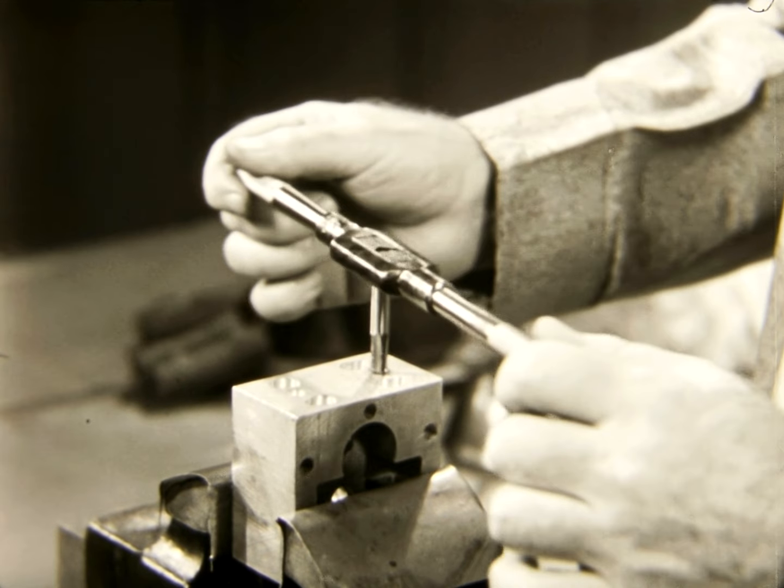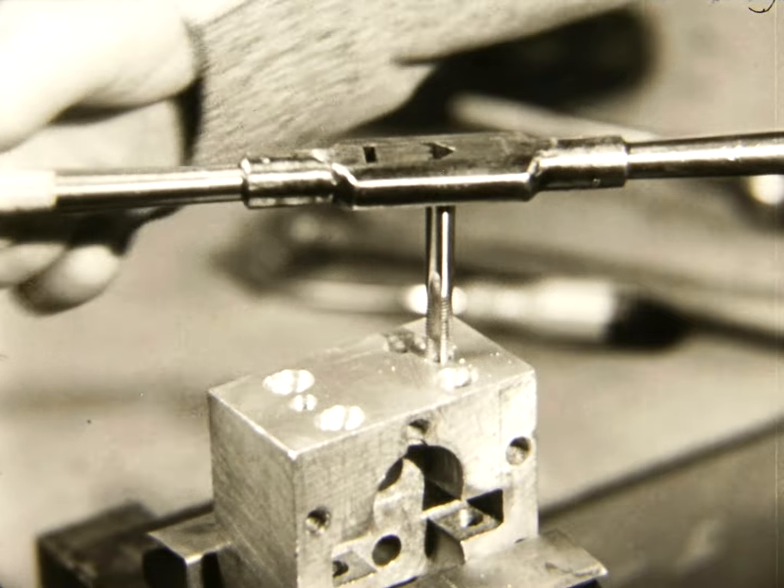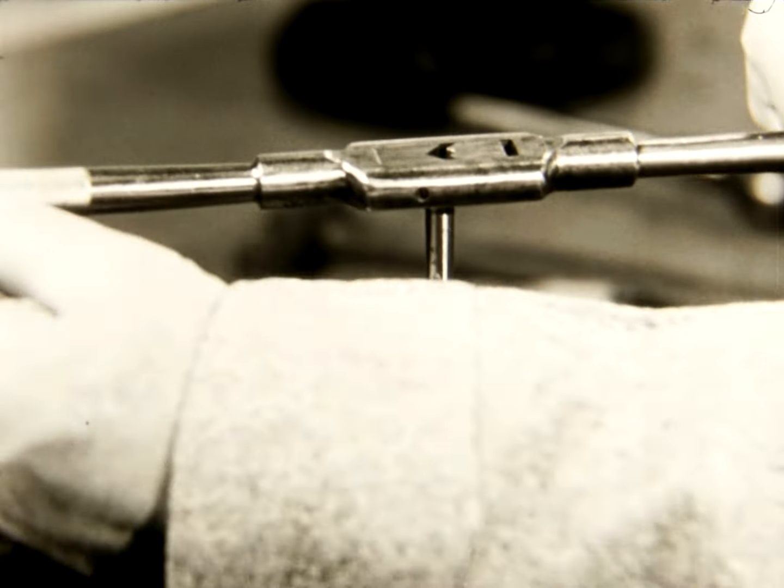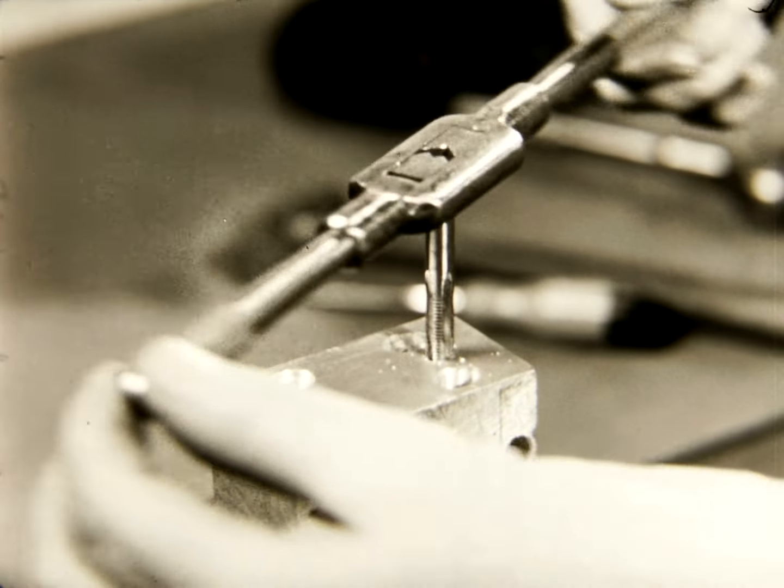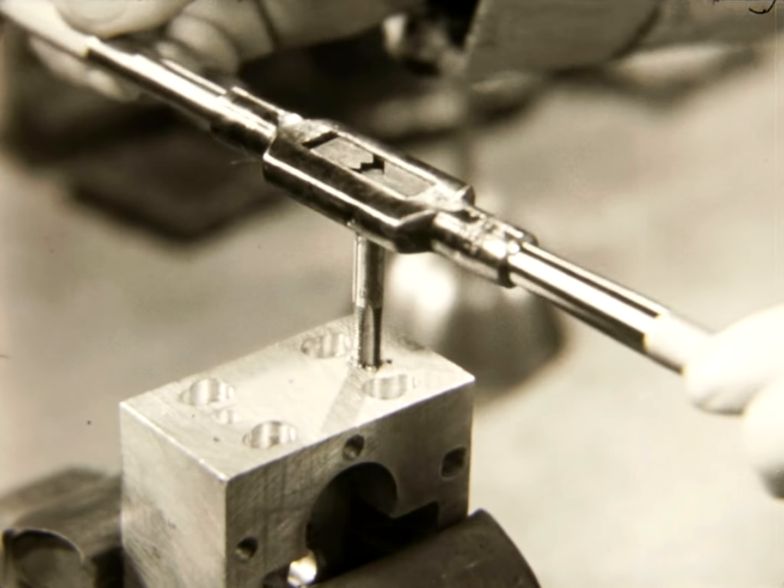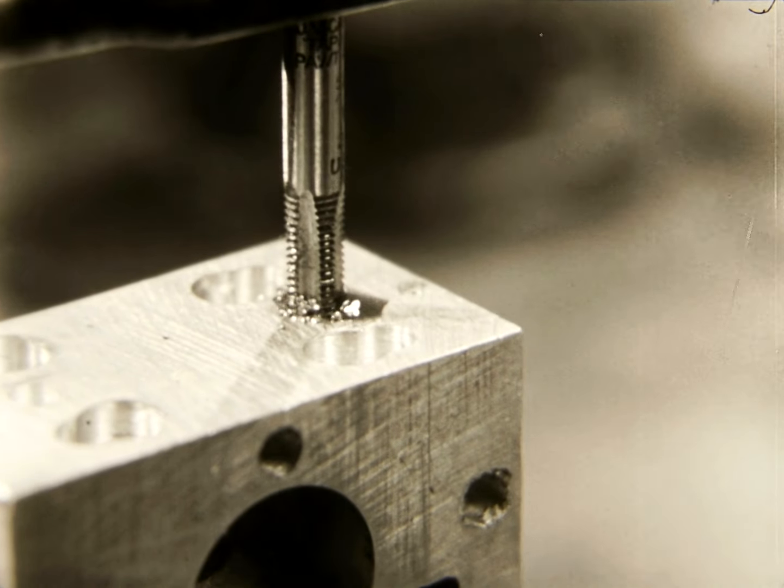Lubricant is added from time to time as the work progresses. With experience, the bench worker learns to feel the action of his tap. When the turning becomes harder instead of forcing the tap, he backs it up about half a turn, which breaks the chip and permits the lubricant to reach the cutting edge of the tap.